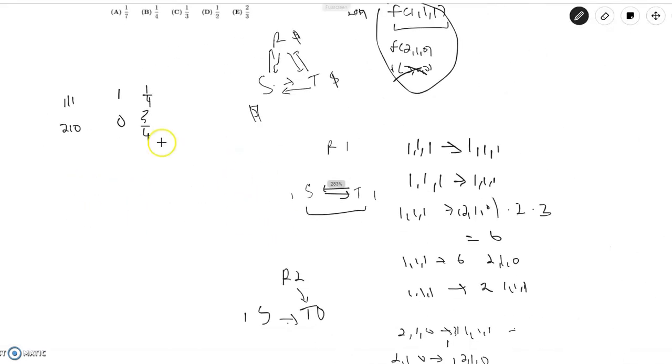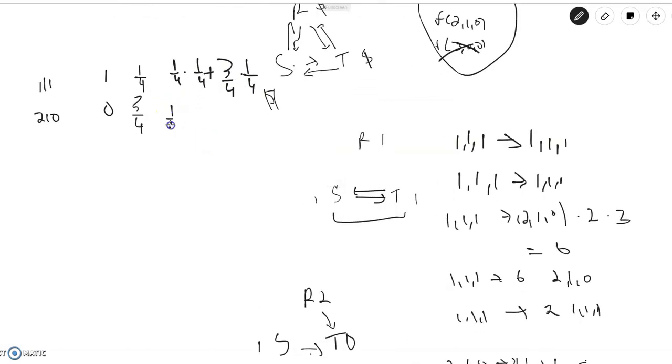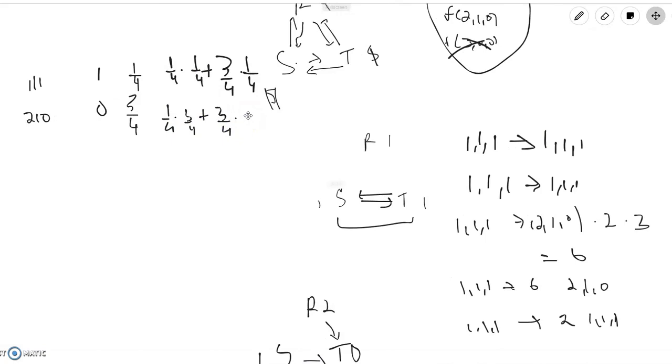And after this, after two rounds, if you go from one one one, which is the probability one fourth, you have one fourth times one fourth here, and then plus three fourths times one fourth. And over here you have one fourth times three fourths plus three fourths times three fourths.